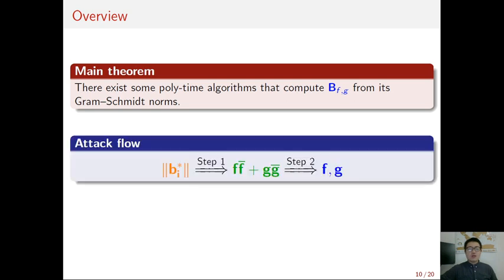Our algorithm consists of two steps. At the first step, we compute a polynomial f·f̄ + g·ḡ from the Gram-Schmidt norm. Here, the bar denotes the complex conjugation. And this step is our main technical result.